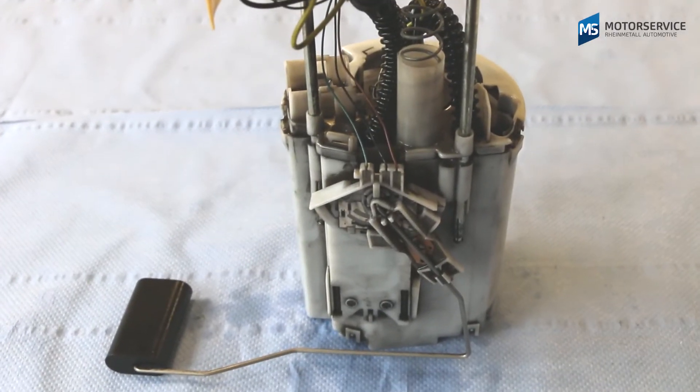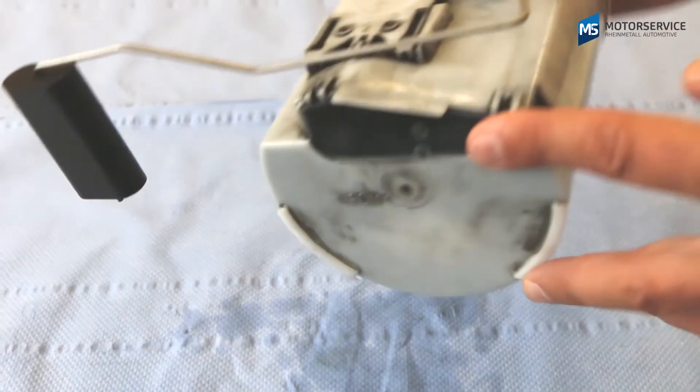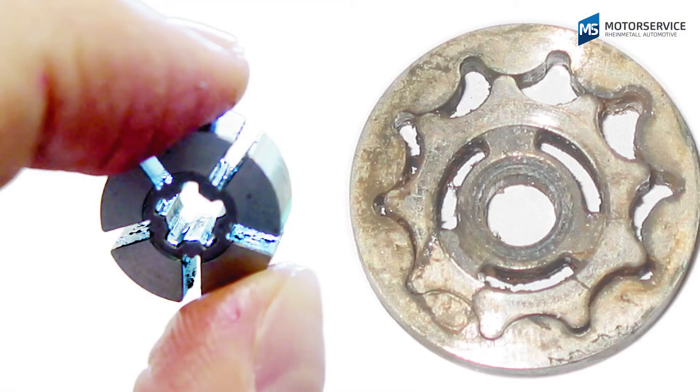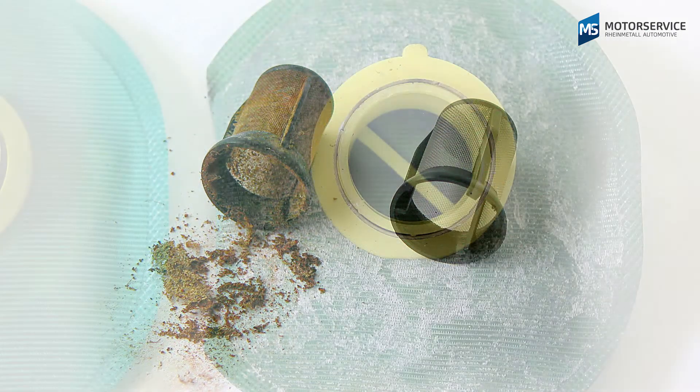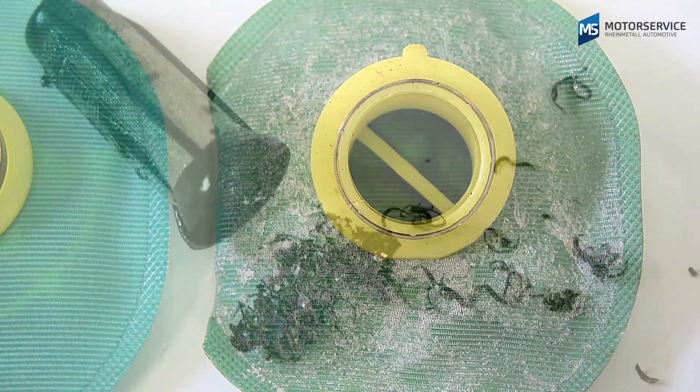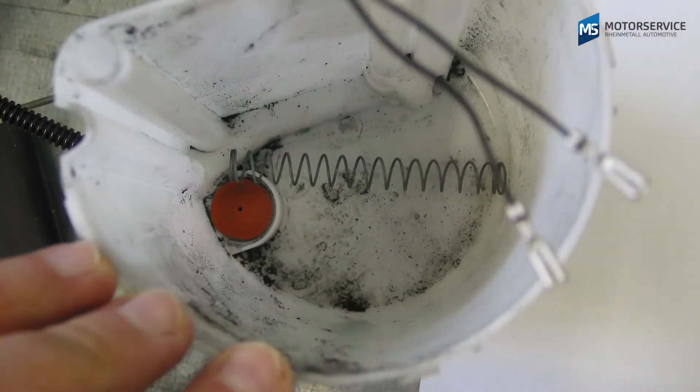Dirt in the fuel tank is generally the main cause of failure in fuel pumps. Either because the dirt is blocking the pump system or because the pump is dry running due to a blocked preliminary filter. So, make sure that impurities do not get into the fuel system.